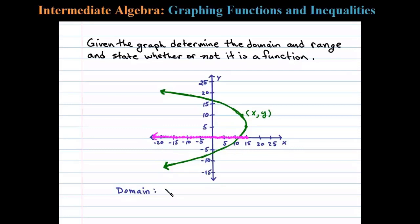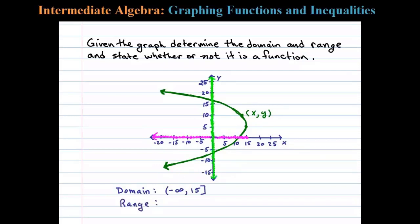We can express this set using interval notation from minus infinity to 15, inclusive. Now the range is defined to be the set of all possible y values, and from the graph we can see that all y values are represented. On the y-axis here I've shaded in the range.